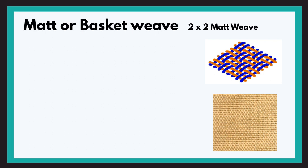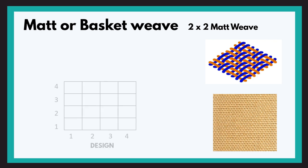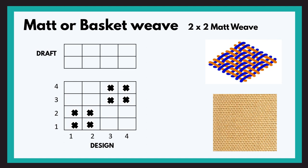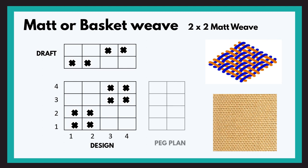Now let us see the last derivative — the mat or basket weave. We will study the 2x2 mat weave structure. The first end passes in a 2 up 2 down order, and similarly the second warp. For the third warp it passes in a 2 down 2 up order, and similarly the fourth end. For the draft: the first and second warps have the same lifting order so they pass through the same heald frame; the third and fourth warps also share a lifting order and pass through the same heald frame. We then mark the pick plan. In the image you can see how a mat or basket weave looks.